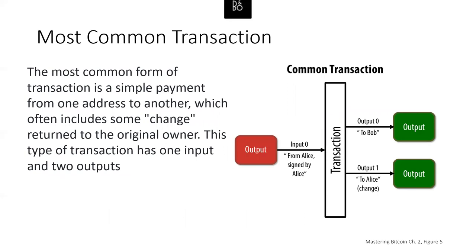The most common form of transaction is a simple payment from one address to another with change returned to the original owner. This type has one input and two outputs: output zero goes to Bob, and output one goes back to Alice as change. If the single input doesn't have enough Bitcoin to cover both outputs plus the transaction fee, the wallet may aggregate multiple inputs before sending.